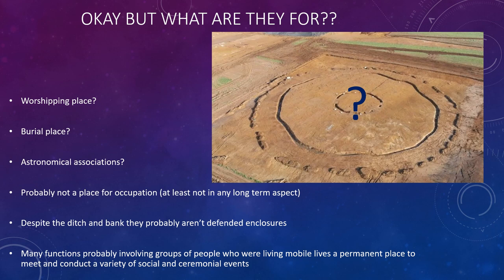So what are henges for? The theories expounded for them include that they're a worshipping place and a burial place in some instances — Stonehenge particularly seems to have an affinity for the dead with quite a few cremations within that monument. There are some inhumations and cremations in henges around the country, but this doesn't seem to be their sole function. There aren't enough burials within these places to suggest that they are a cemetery. They may also have astronomical associations; it has been theorized that the Thornborough henges — that trio in Yorkshire — represent Orion's belt, so possibly henges are there to commemorate particular celestial phenomena.